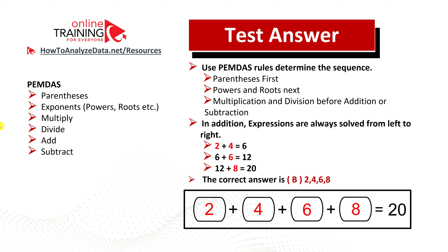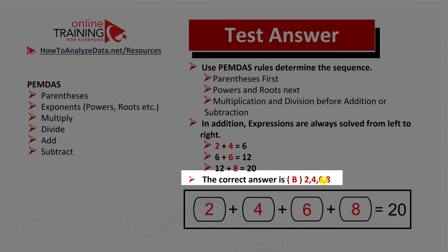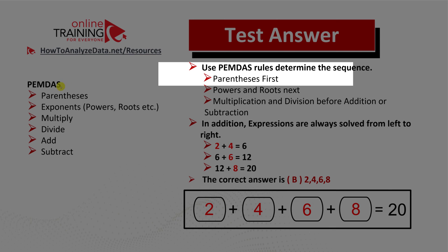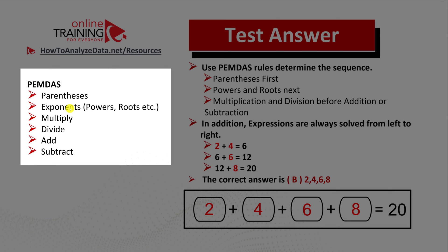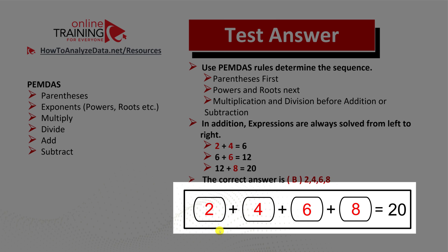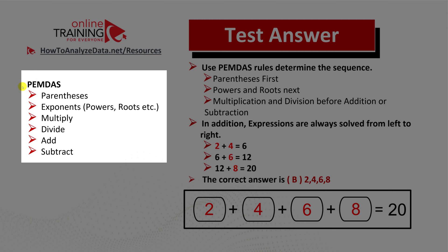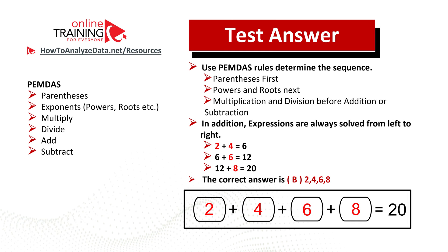This particular example is very simple — you're just adding up numbers. The answer is choice B: two four six eight. Two plus four is six, six plus six is twelve, and twelve plus eight is twenty. A lot of times you may need to use the PEMDAS rule. PEMDAS stands for parentheses, exponents (which includes powers and roots), multiplication, division, addition, and subtraction — representing the order of operations. In this case we were only adding things, so there's no need to prioritize other operations.